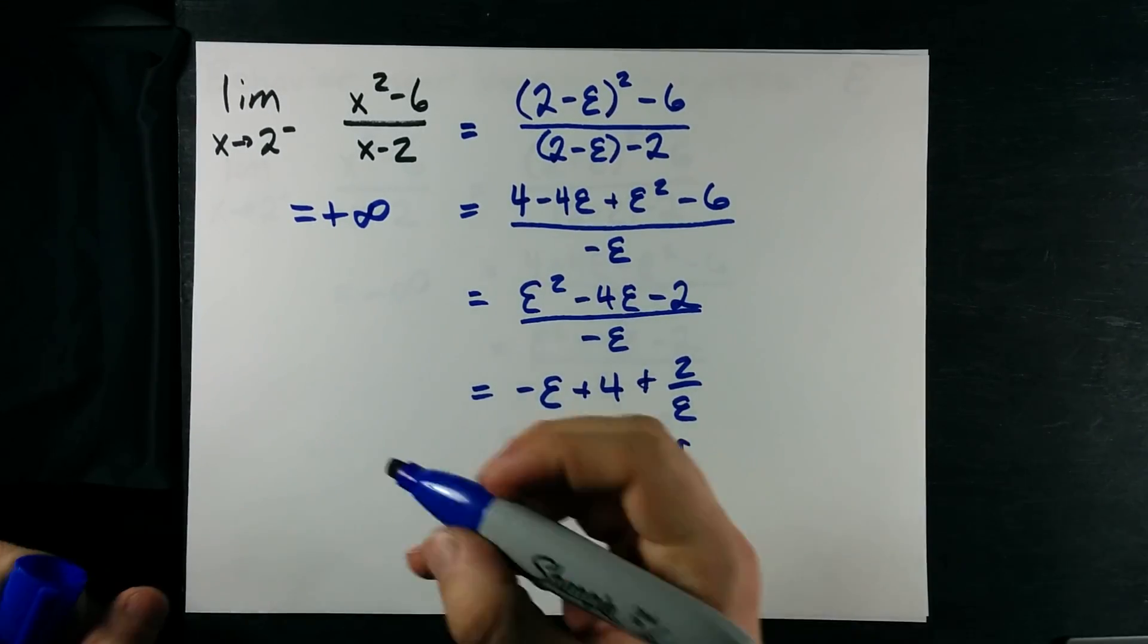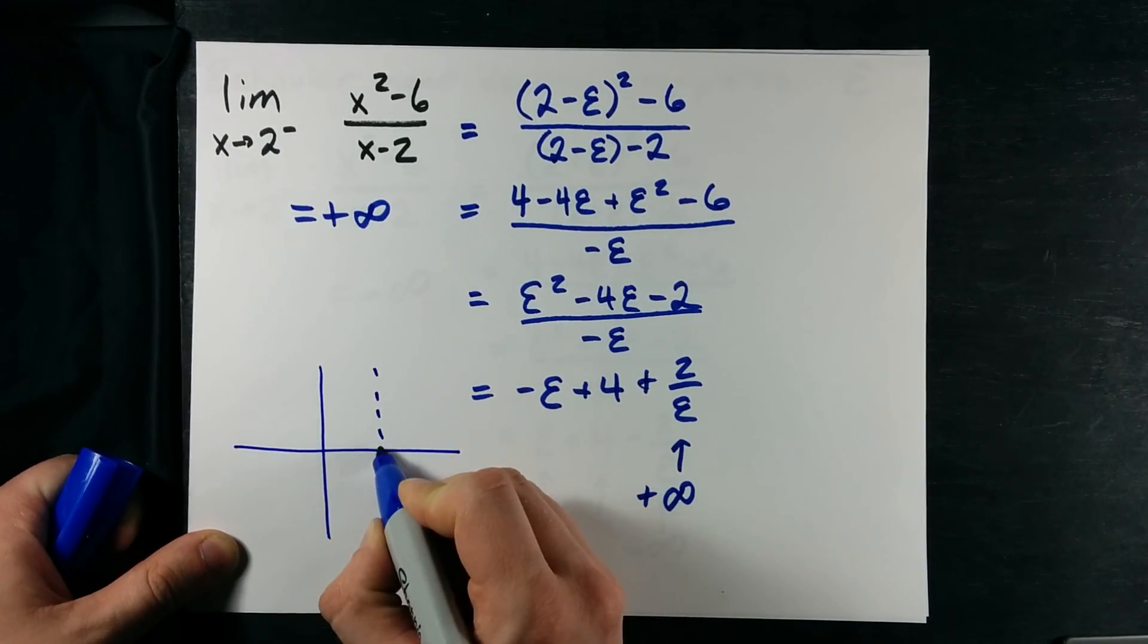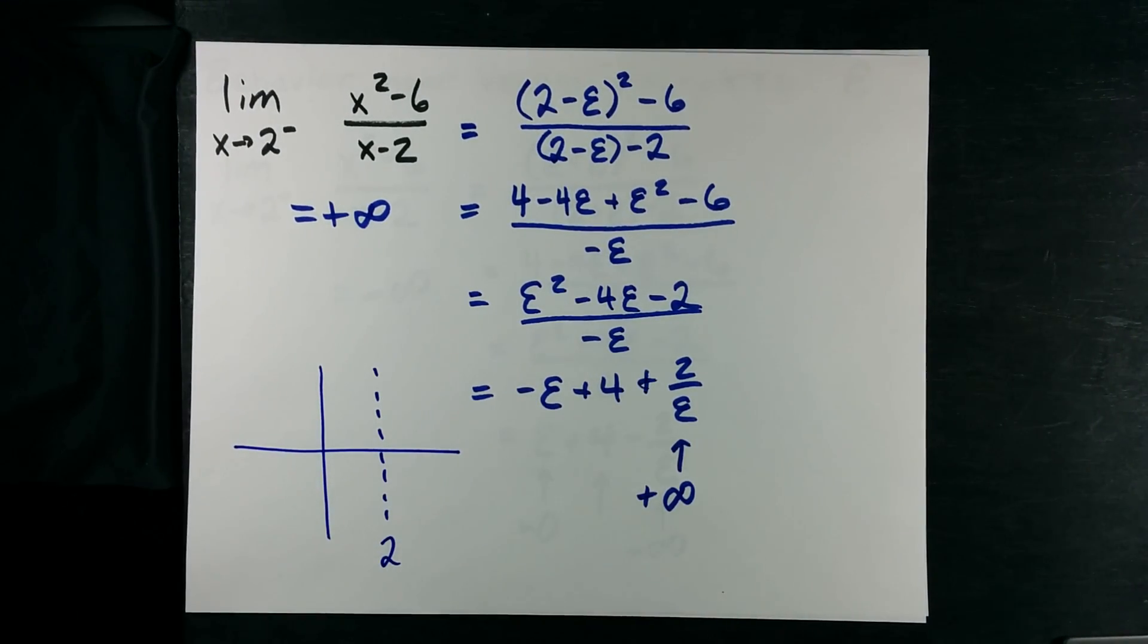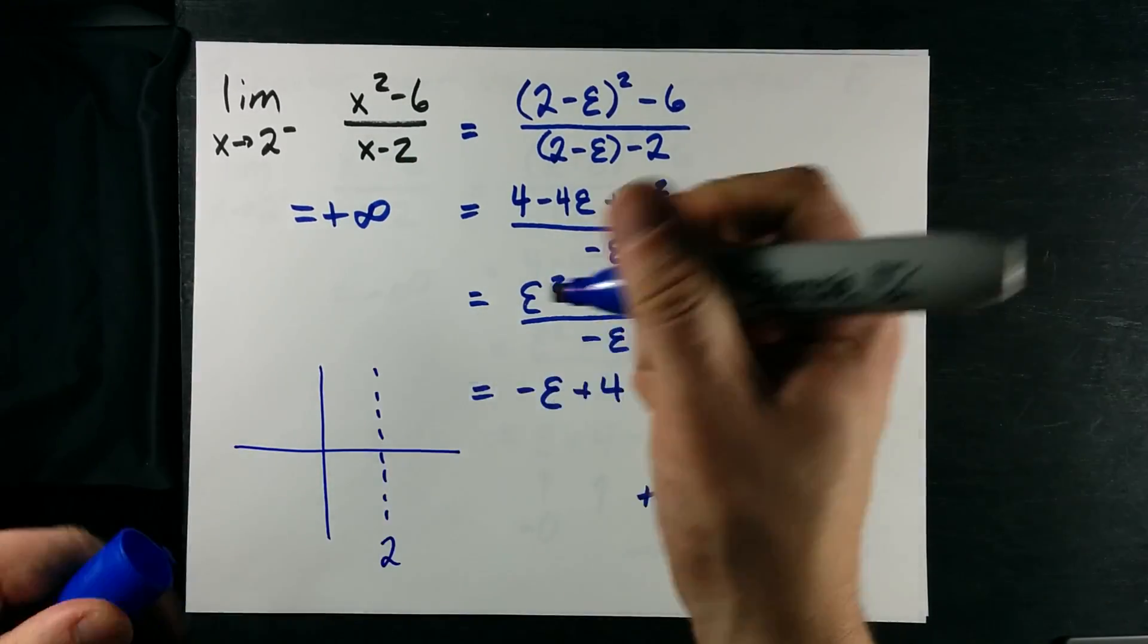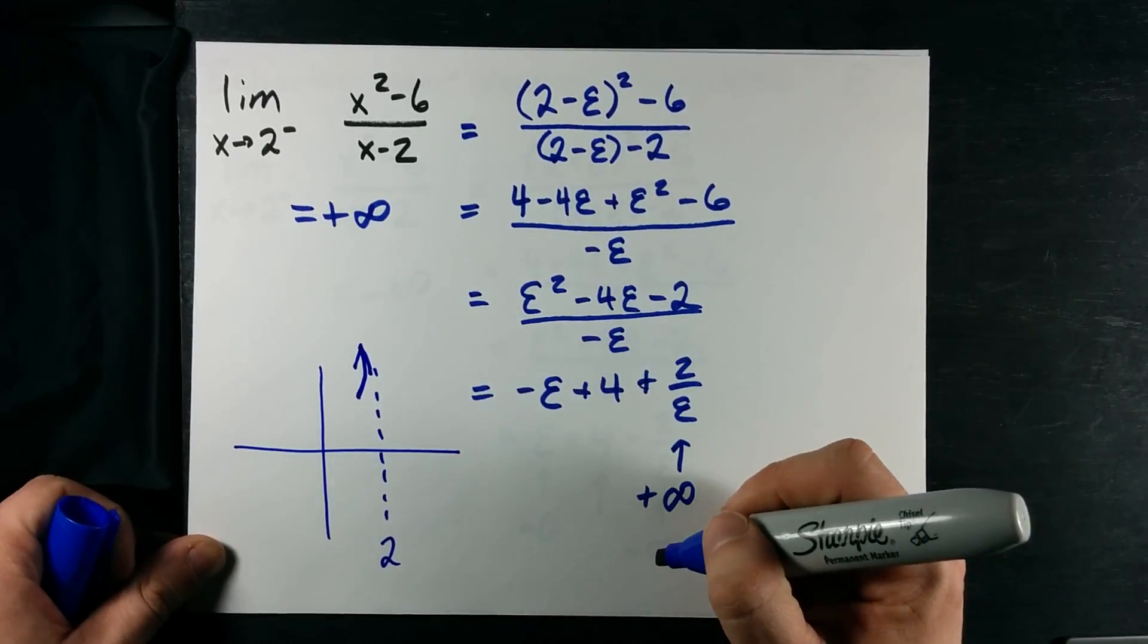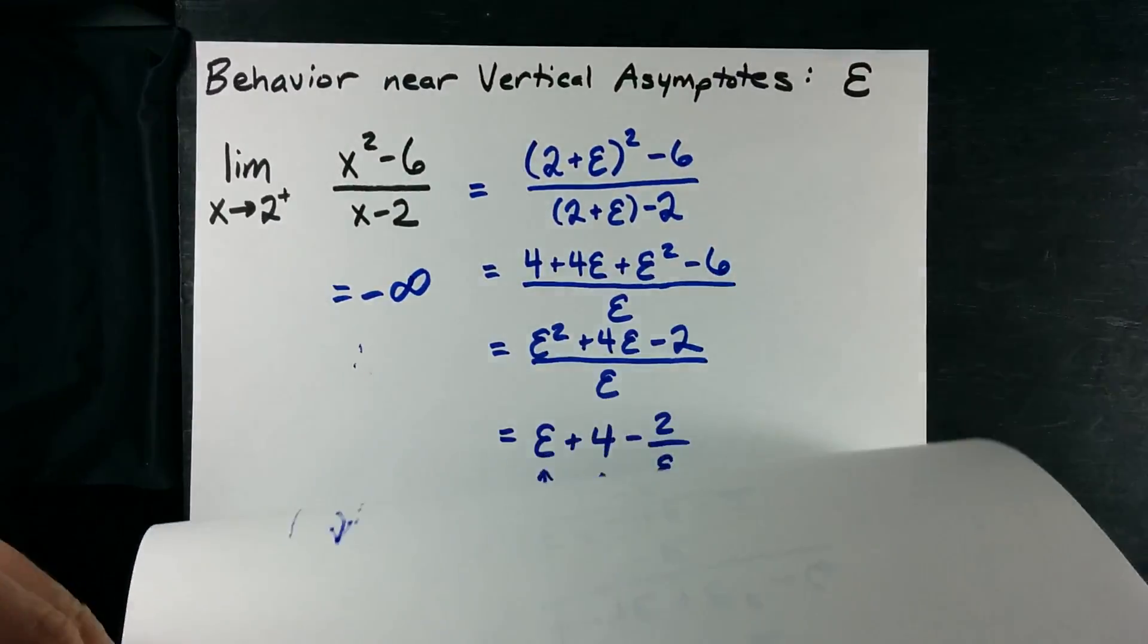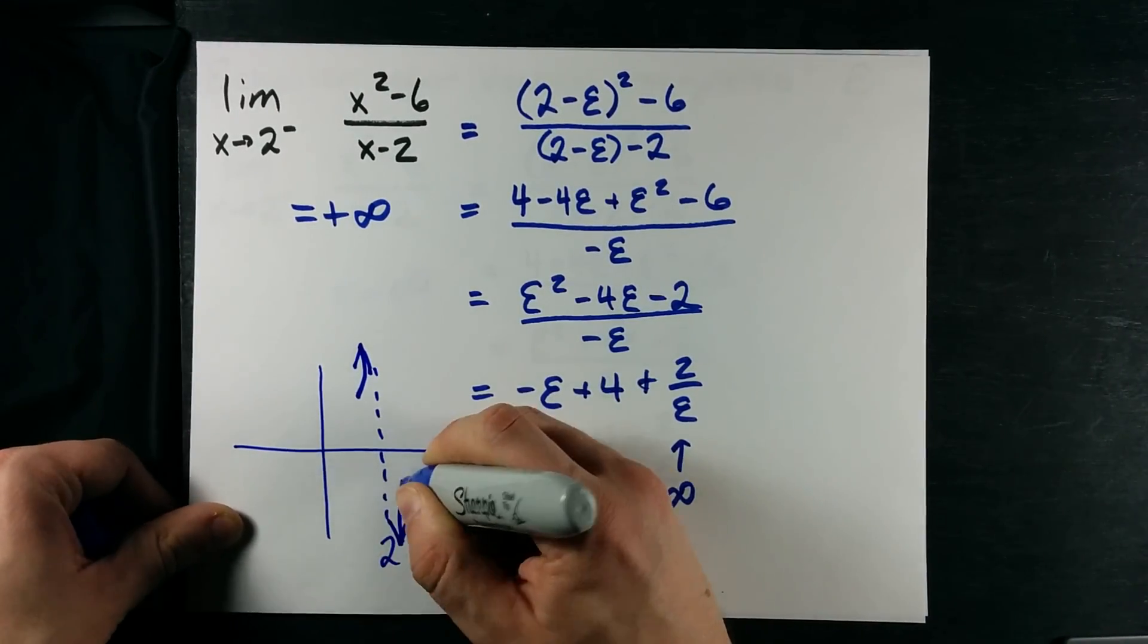If you're curious how that makes the graph look, here's my vertical asymptote at 2. What I know is that as I approach 2 from the left, I'm going to be getting closer to positive infinity. It looks something like that. And as I approach it from the right, I'm getting closer to negative infinity. So it must point down.